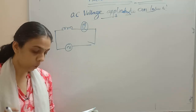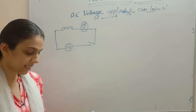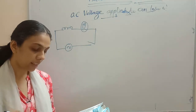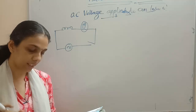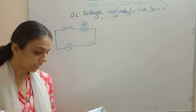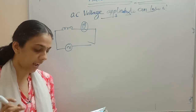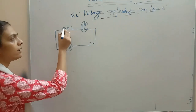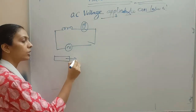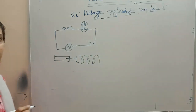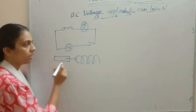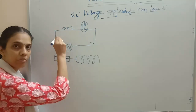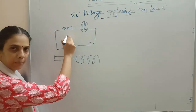A light bulb and an open coil inductor are connected to an AC source through a key. The switch is closed and after some time an iron rod is inserted into the interior of the inductor. The question is: does the glow of the bulb increase, decrease, or remain unchanged as the iron rod is inserted? In this inductive coil, current is alternating, so magnetic flux linked with the circuit is changing and EMF is being induced — it behaves as an inductor.